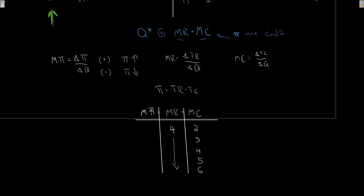Let's take an example where marginal revenue is fixed at $4 and marginal cost rises: 2, 3, 4, 5, 6. For the first unit, marginal profit = 4−2 = +2. I made an extra $2, so let's produce more. Next unit: MR=4, MC=3, marginal profit = +1. Profit is still growing, so we produce more again.